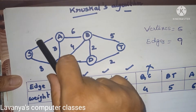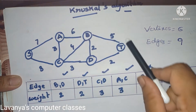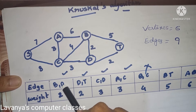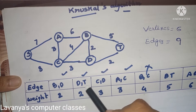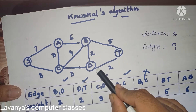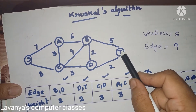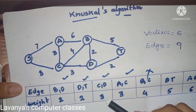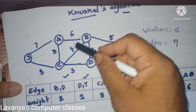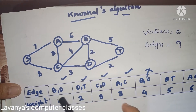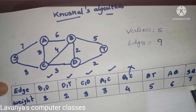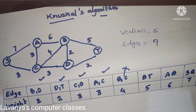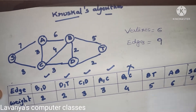In this table, which one is the minimum edge? B to D with weight 2 — write that first. Next minimum is D–T with weight 2. Then next minimum is 3: A–C is 3, and C–D is also 3. Like this, we write all edges with their minimum weights in ascending order — minimum weight first, highest weight last. First we prepare the table like this.